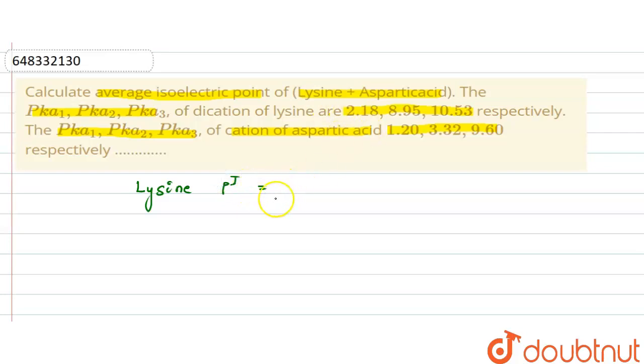So average value is pKa1 plus pKa2 plus pKa3 divided by 3. So the answer is, lysine answer is 7.22.